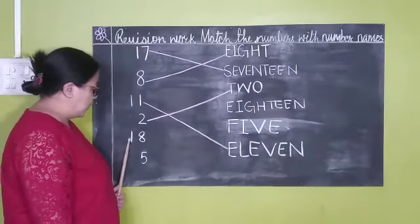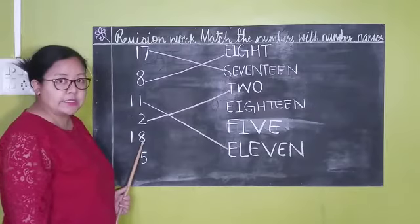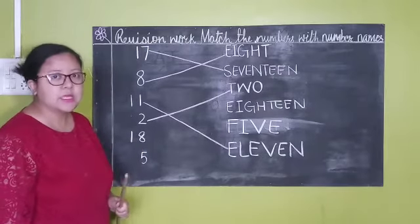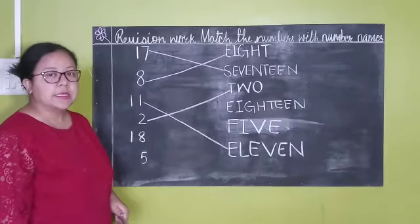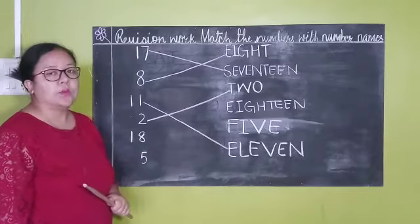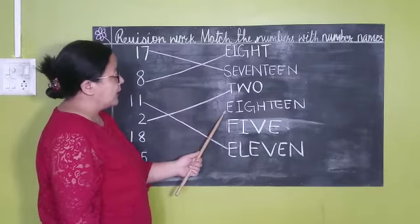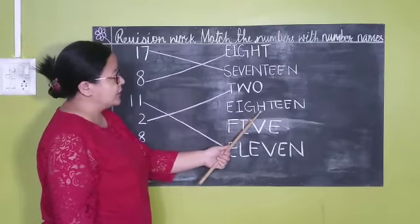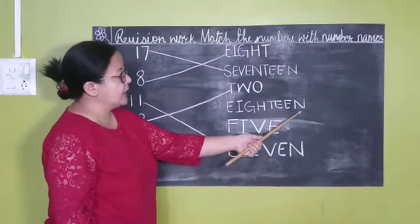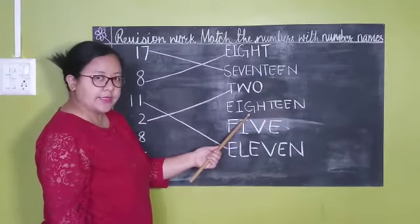Okay. Now another number. 1, 8, 18. What number is this? 1, 8, 18. Now find out. Where is 18? Okay? So E, I, G, H, T, E, E, N, 18. Is this right?